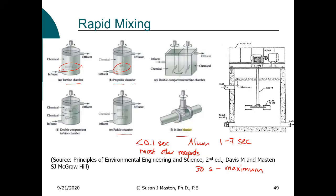We also add baffling to prevent vortexing. Vortexing creates eddy formation, which means you don't have good mixing along the edges of the tank. To counteract this, we place baffles extending out into the reactor. Often there would be four baffles, which improves mixing throughout the tank.